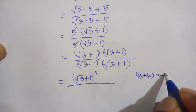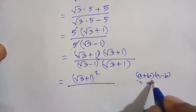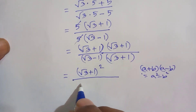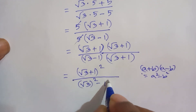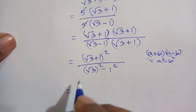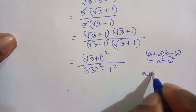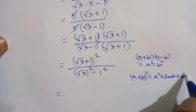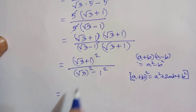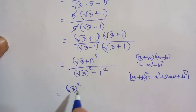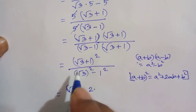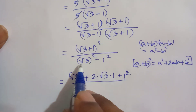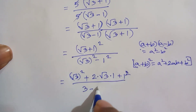The denominator is (root 3 minus 1)(root 3 plus 1). Using the identity (a + b)(a − b) = a² − b², this becomes root 3 whole square minus 1 squared. For the numerator, using (a + b)² = a² + 2ab + b², we get root 3 whole squared plus 2 times root 3 times 1 plus 1 squared.